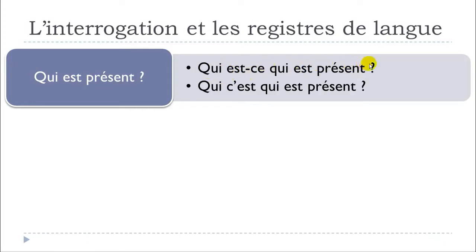'Qui est-ce qui est présent?' — everyday language. Then the last one: 'Qui c'est qui est présent?' — this is really spoken and not formal at all. Don't use that if you're not sure about the context or the persons you're talking with. I'd rather advise you to use the first or second form. Keep in mind that 'est-ce qui' is quite oral.